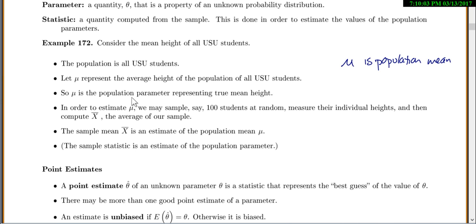In order to estimate mu, we might sample, say, 100 students chosen at random, measure their heights, and then compute the average of our sample. So x-bar is our sample average. We have different notations for each thing, and you will want to memorize that. Mu is for your population mean, x-bar is for your sample mean, or mean and average, we use those interchangeably.